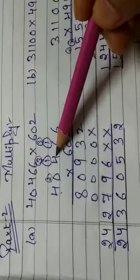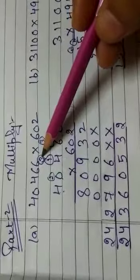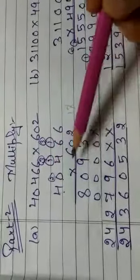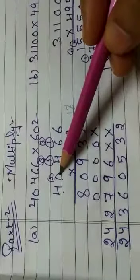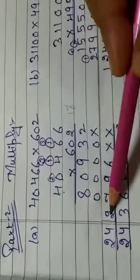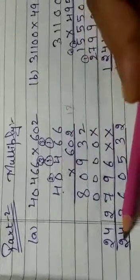6, 4 is 24. 24 plus 3, 27. And 6, 0 is 0. 0 plus 2, 2. 6, 4 is 24.